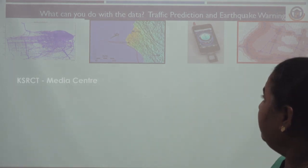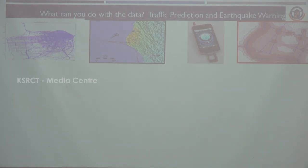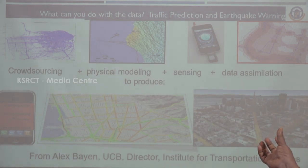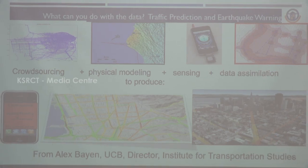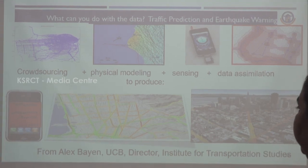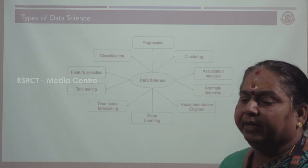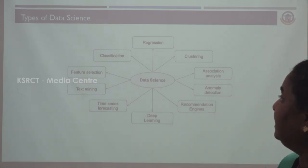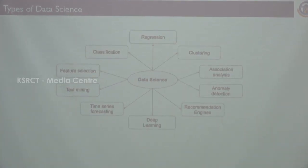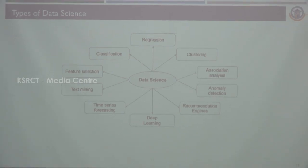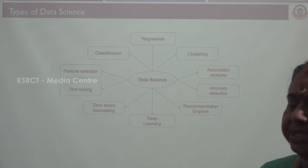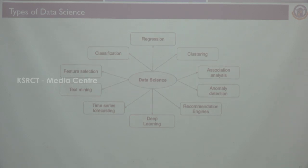One example of a dataset is predicting traffic and earthquake warnings in the world. The first example is an earthquake data warning, and the second is crowd signal in traffic. There are different types of data science: regression, clustering, classification, feature selection, text mining, time series forecasting, deep learning, recommendation engines, anomaly detection, and association analysis.